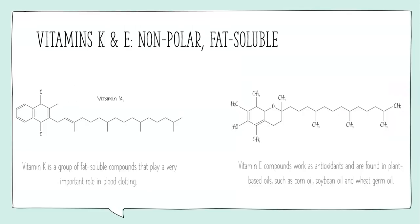Vitamins K and E are the last two fat-soluble vitamins. We see large hydrocarbon chains with little or no hydroxyl groups — vitamin E has one hydroxyl, and vitamin K has only two ketone groups present. Vitamin K is important in blood clotting, while vitamin E is an antioxidant found in oils. Most moisturizers and topical skin creams also contain a large amount of vitamin E.